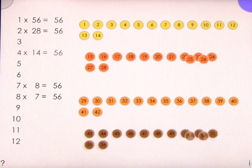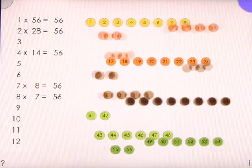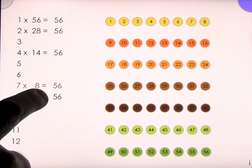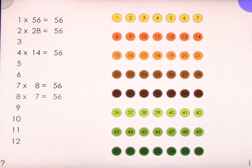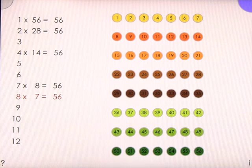Then 2 times 28, it splits it up. 4 times 14, 7 times 8 and then 8 times 7. So it breaks it down visually for you to see.